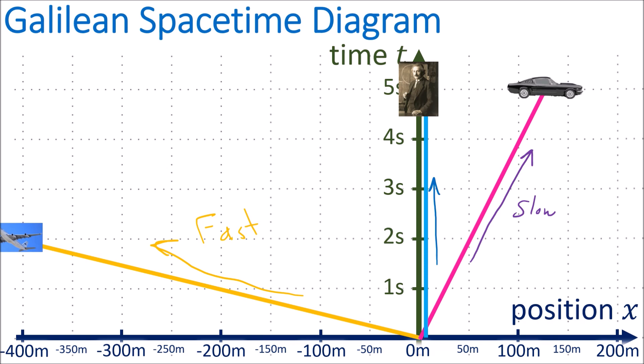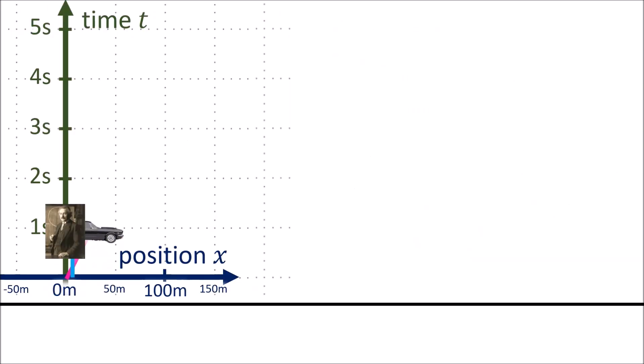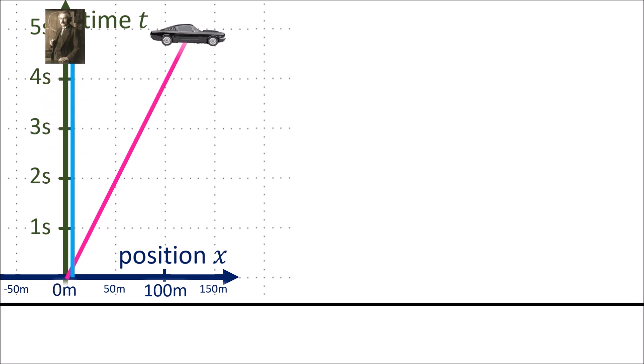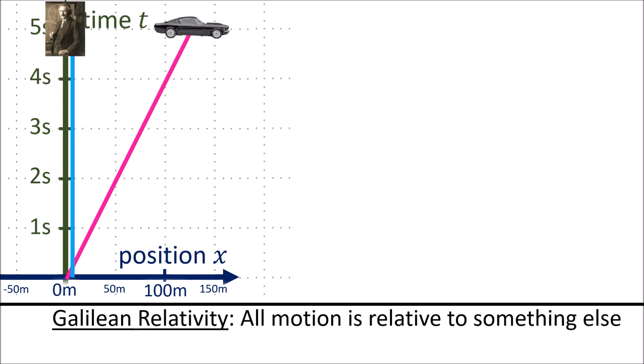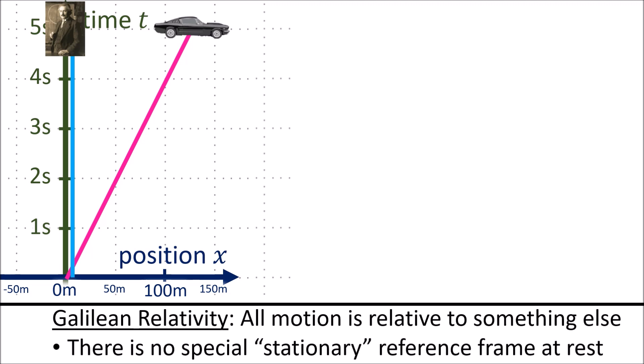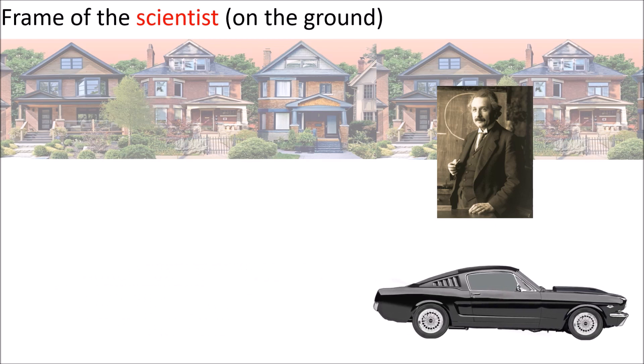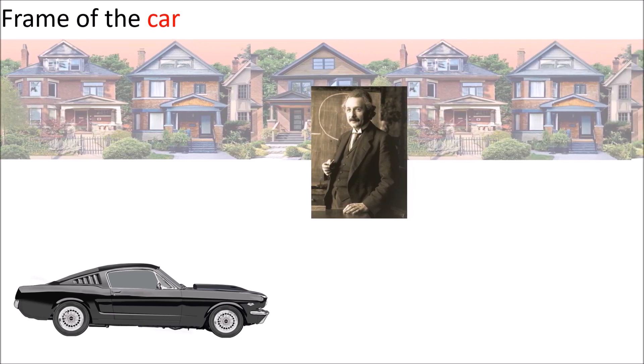But there is one last very important point. Earlier I said that when a world line is vertical, it means the object is stationary and not moving. However, according to Galilean relativity, all motion is relative to something else, and there is no special stationary reference frame that's at rest. From the point of view of the scientist, the scientist is stationary and the car is driving by to the right. But from the point of view of the car, the car is stationary and the scientist is going by to the left.